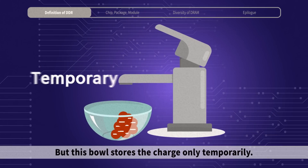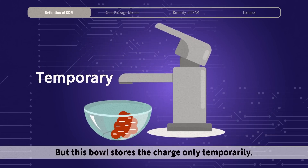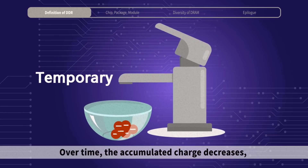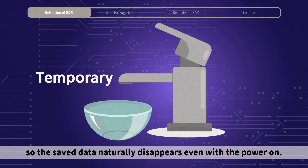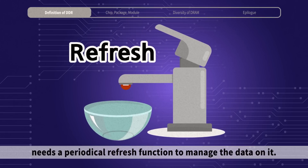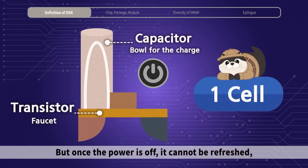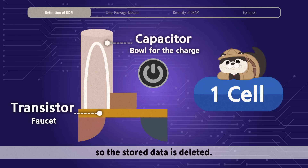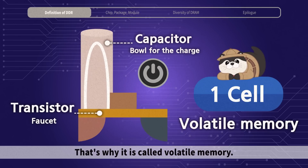But this bowl stores the charge only temporarily. Over time, the accumulated charge decreases, so the saved data naturally disappears even with the power on. As a result, dynamic RAM, or DRAM, needs a periodical refresh function to manage the data on it. But once the power is off, it cannot be refreshed, so the stored data is deleted. That's why it is called volatile memory.